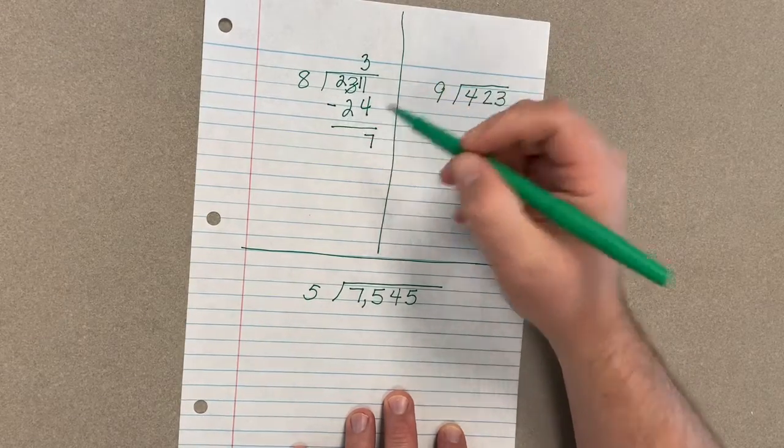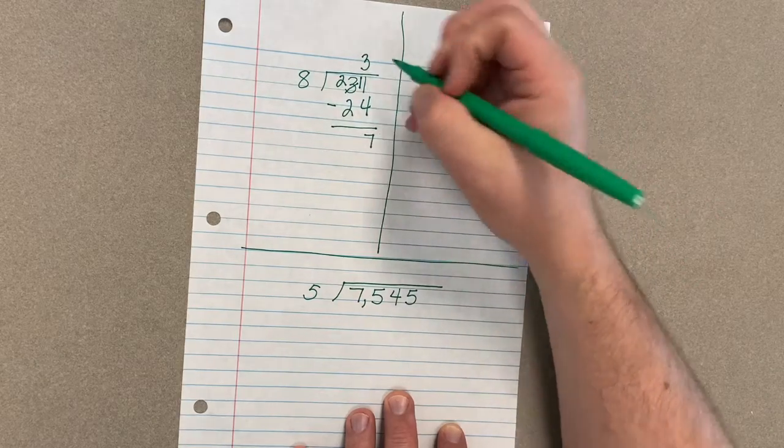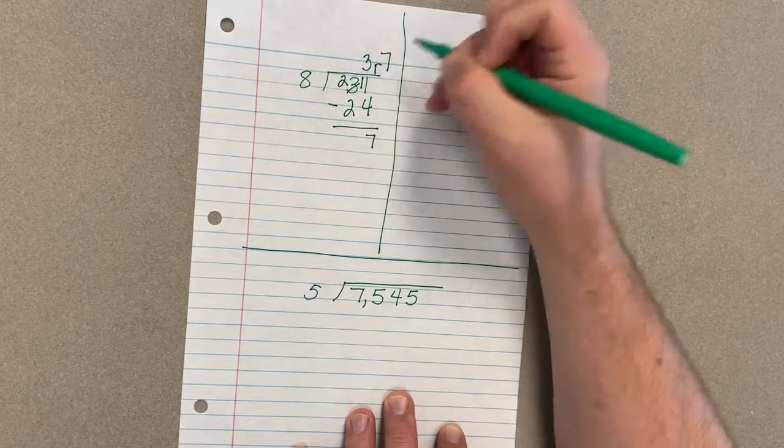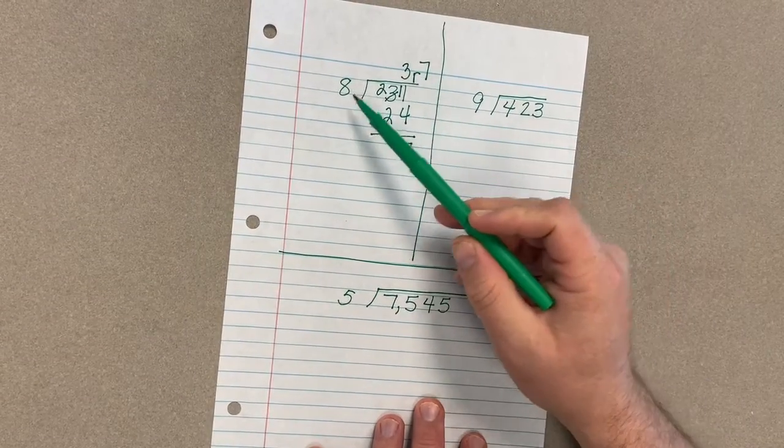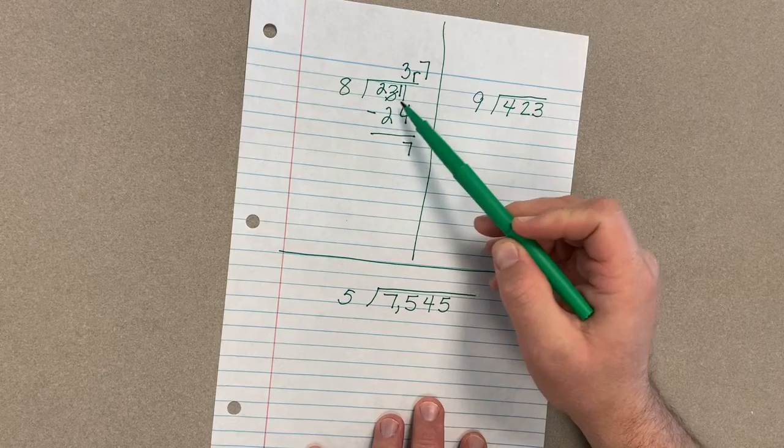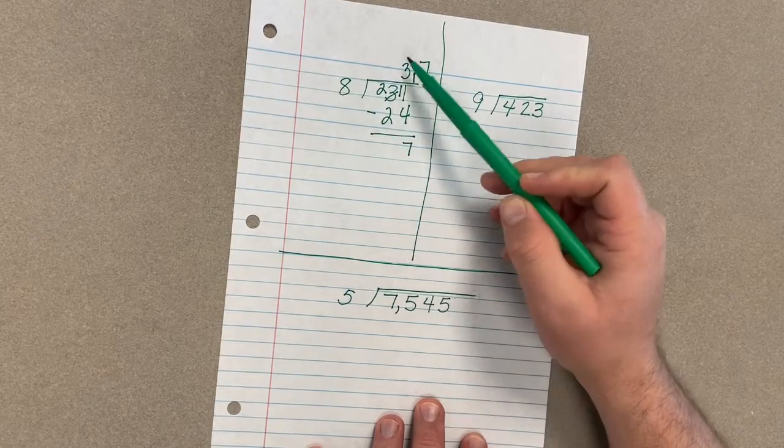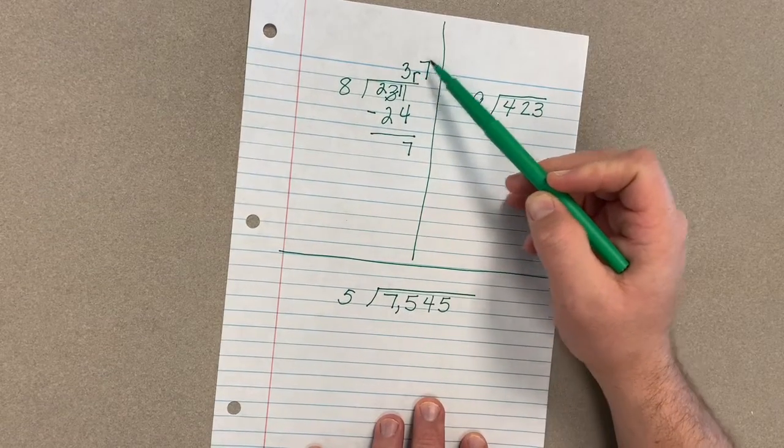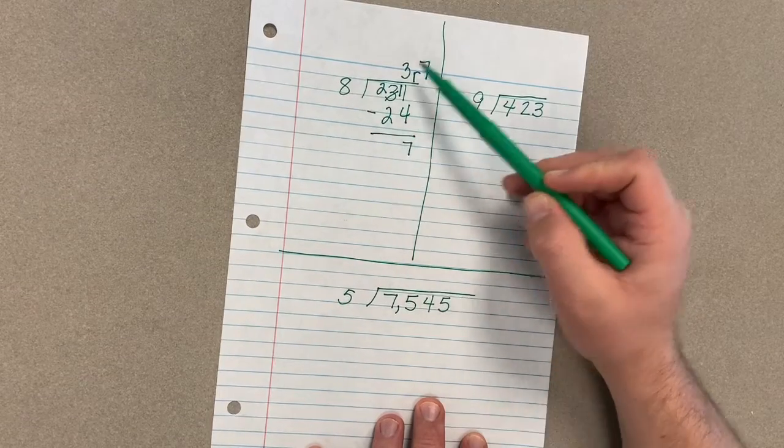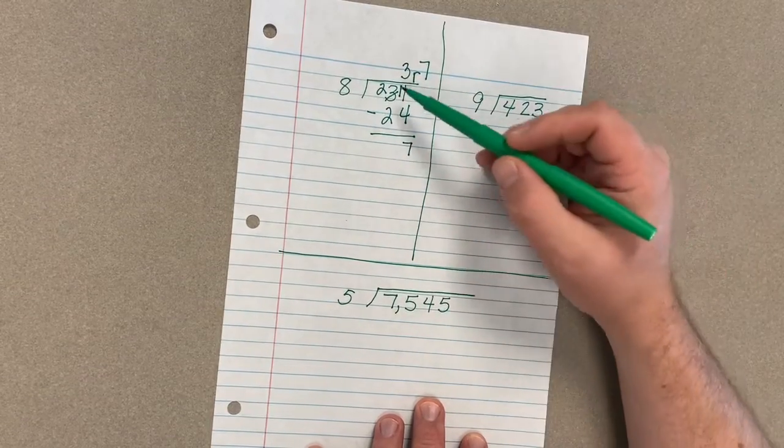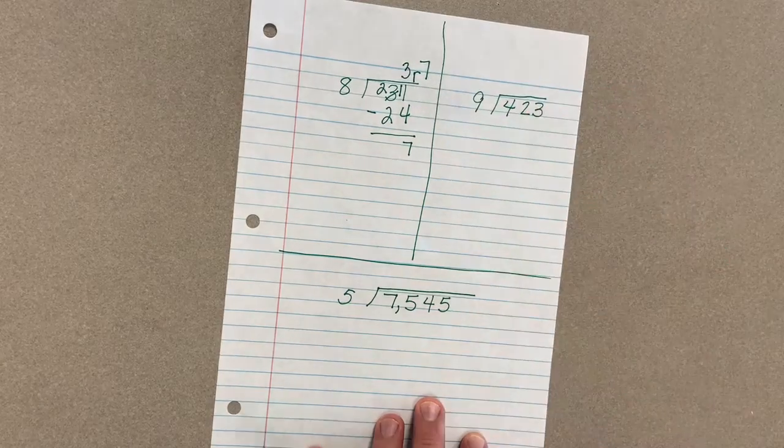And 2 minus 2 is nothing, so I've got 3 and I'm going to have a remainder of 7. What this means of course is that when I took my 31 things and put them into groups of eight, I had three full groups. I also had seven left over towards a fourth group, but I'm missing that last one to make a full group of eight. So I have three full groups with a remainder of seven left over.